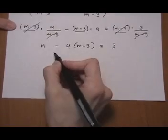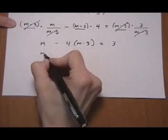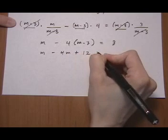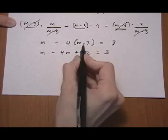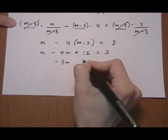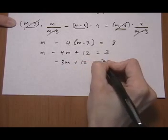Now we just keep going and solve it like we normally would. So we're going to distribute. So we get m take away 4m plus 12 equals 3. Watch the signs again when you're distributing there. m minus 4m is minus 3m plus 12 equals 3.